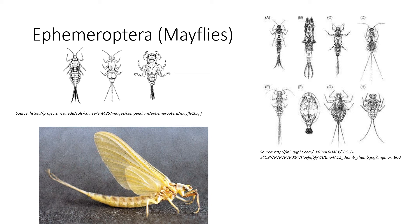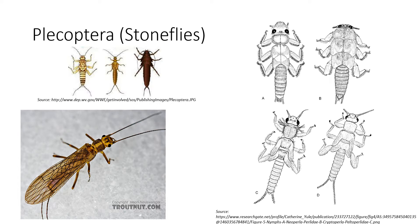Our next group is Plecoptera — stoneflies. These guys typically like sort of higher-velocity areas with a lot of oxygen. These guys almost always have two tails. Their tails are usually more robust than mayflies. Generally, stoneflies are more robust than mayflies, but not always.